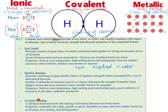The last type of intramolecular forces is covalent bonding, which involves the sharing of electrons between two non-metal atoms. These non-metal atoms can be identical or different. Their properties: in general, they are soft solids, liquids, or gases. They are insoluble in water and do not conduct electricity in any state. They have low melting and boiling points, as their forces of attraction are the weakest amongst all intramolecular forces.